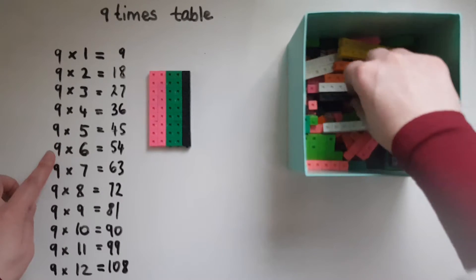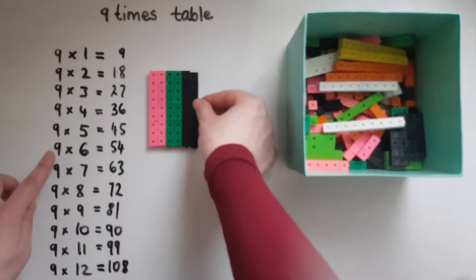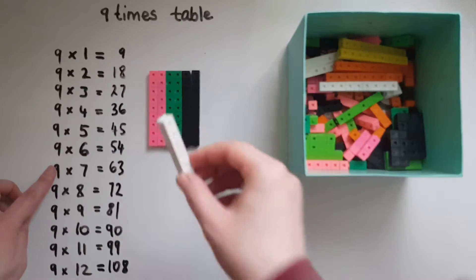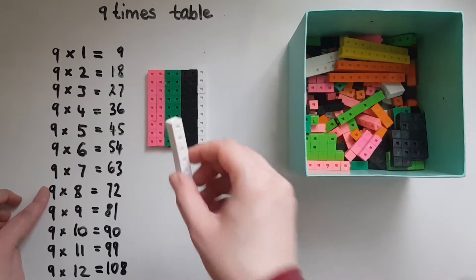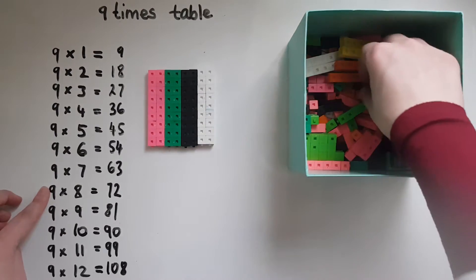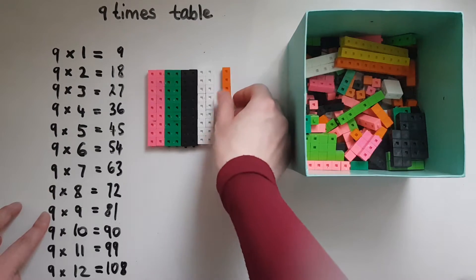9 times 6 is 54. 9 times 7 is 63. 9 times 8 is 72. 9 times 9 is 81.